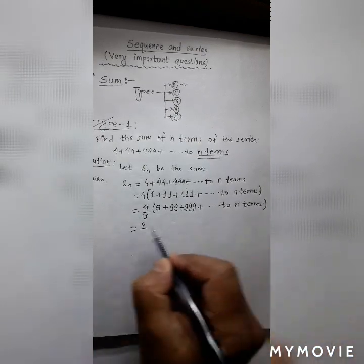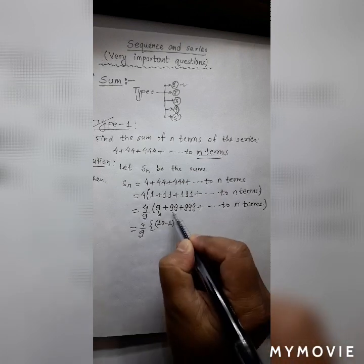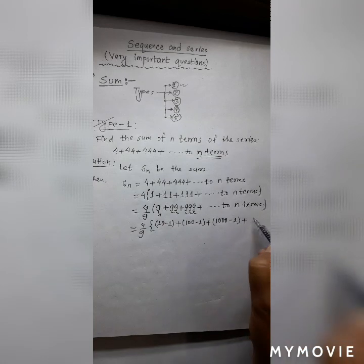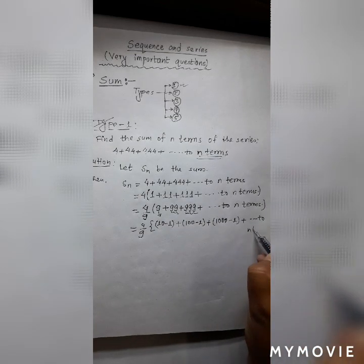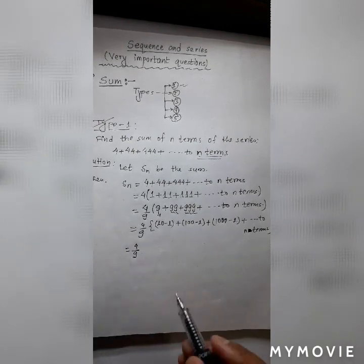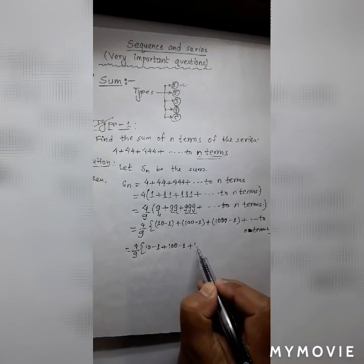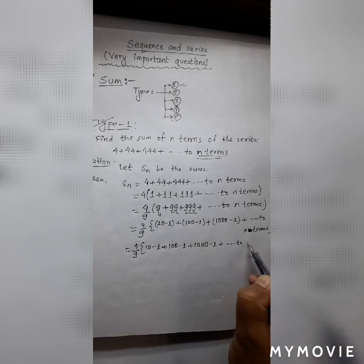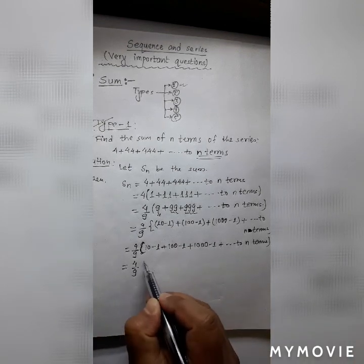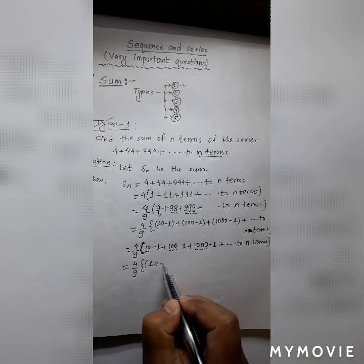Now we have all digits as 9. We rewrite: 9 = 10 minus 1, 99 = 100 minus 1, 999 = 1000 minus 1, and this goes to n terms. Now we can separate all the terms: 10 minus 1 plus 100 minus 1 plus 1000 minus 1, up to n terms. We now have two different series.